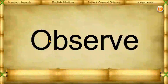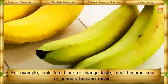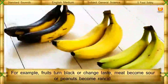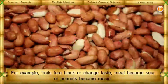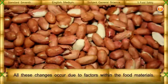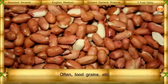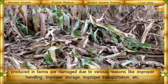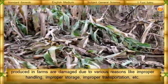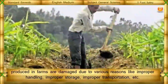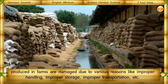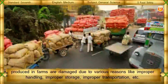Various kinds of changes occur in food materials. For example, fruits turn black or change taste, meat becomes sour, or peanuts become rancid. All these changes occur due to factors within the food materials. Often, food grains produced in farms are damaged due to various reasons like improper handling, improper storage, and improper transportation.